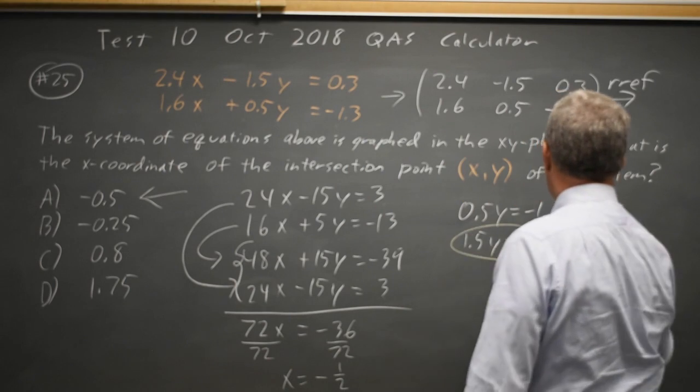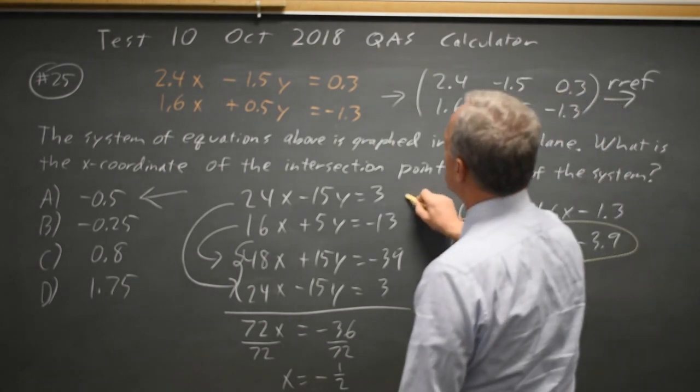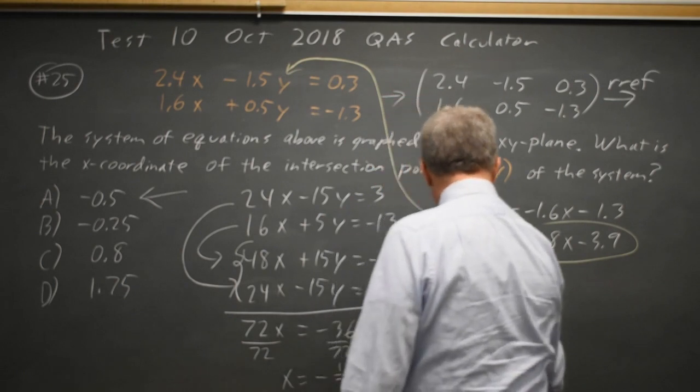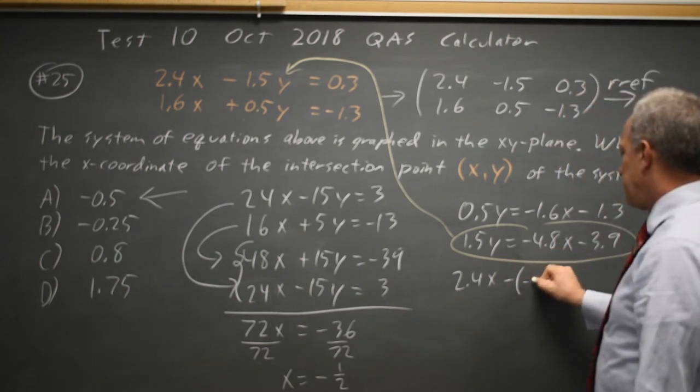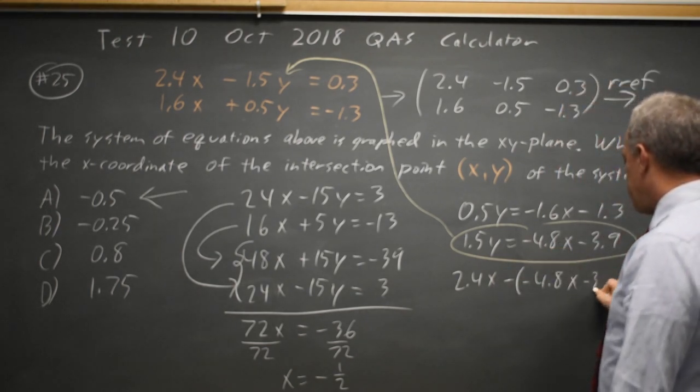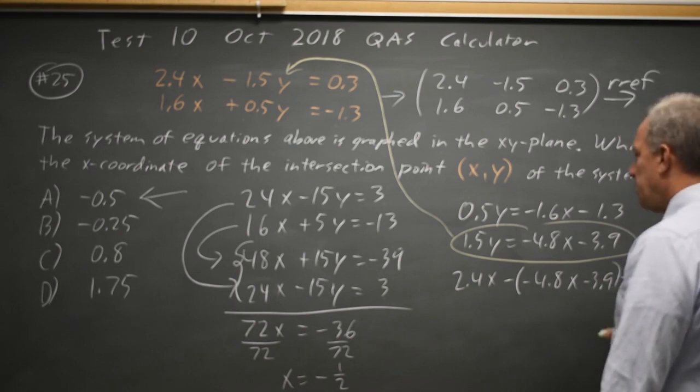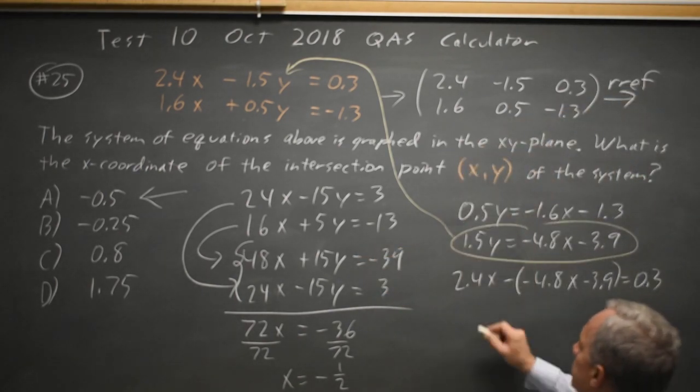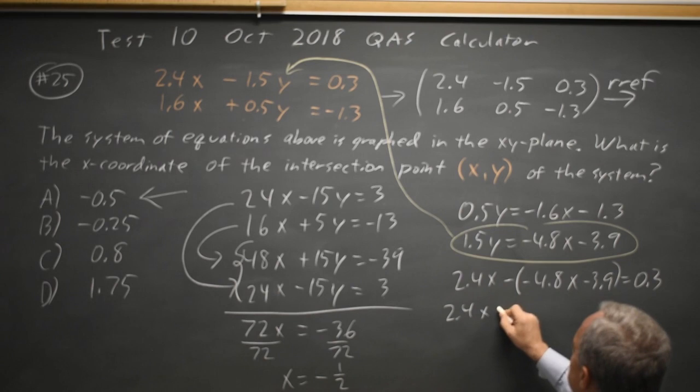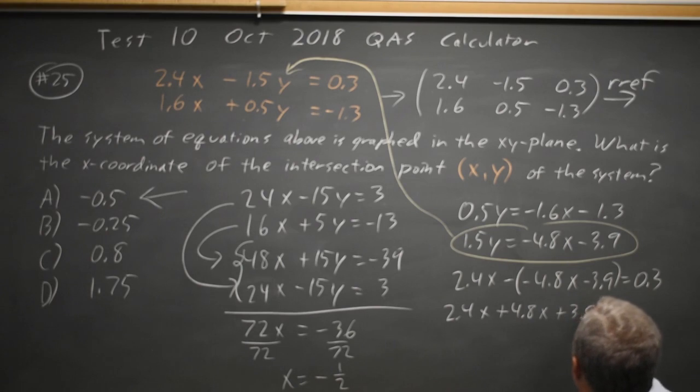If I substitute this expression in for y right here, for 1.5y here, I have 2.4x minus this quantity, negative 4.8x minus 3.9 equals 0.3. And we'll see that this is the same computation I did here, just arrived at it in a different manner.